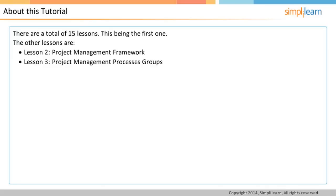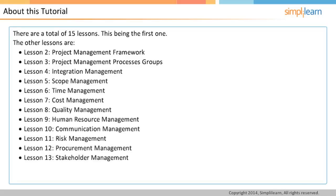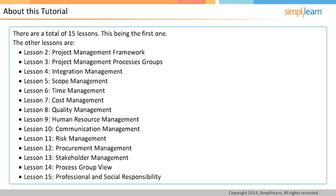Lesson three, project management process groups, aims to explain the five project management process groups. The ten knowledge areas are covered in lessons four to thirteen, each lesson dedicated to each of the ten areas. Lesson fourteen revises the same processes from a process group perspective. In addition to the five process groups and ten knowledge areas, PMI gives weightage to professional and social responsibility, which has its own lesson. Once you are through with these fifteen lessons, you can go ahead and take our online practice tests.